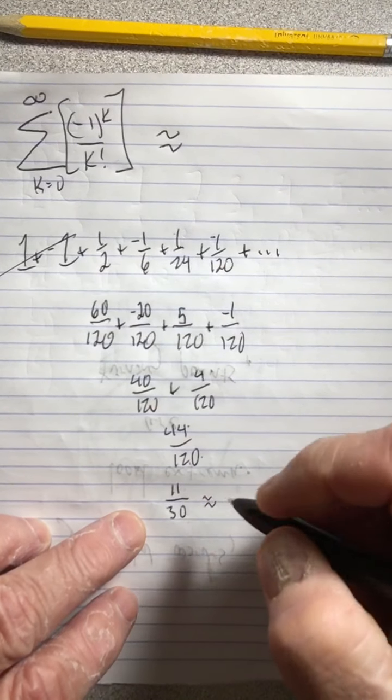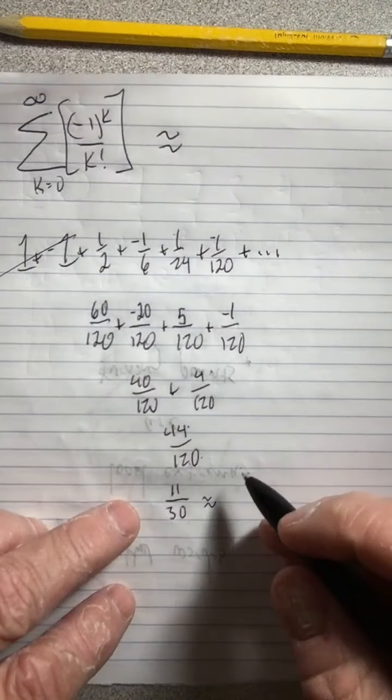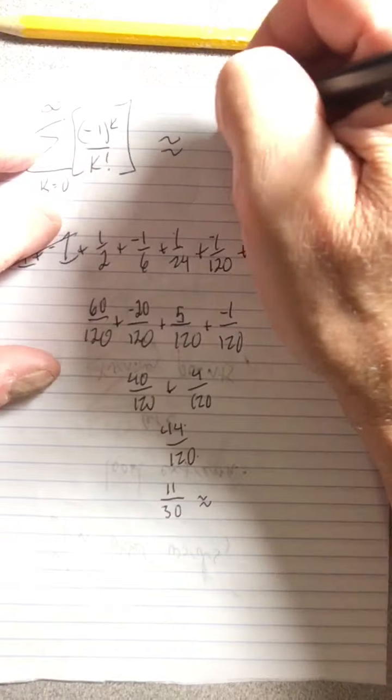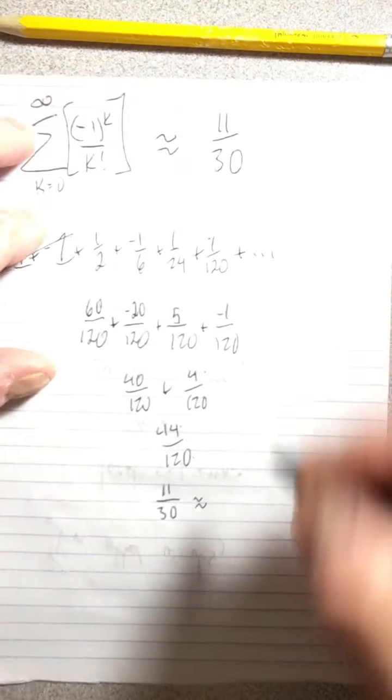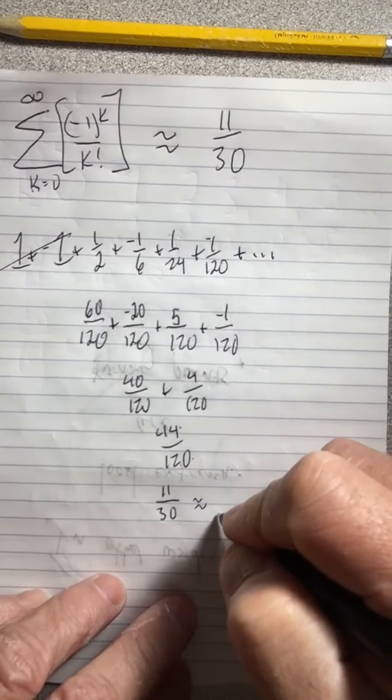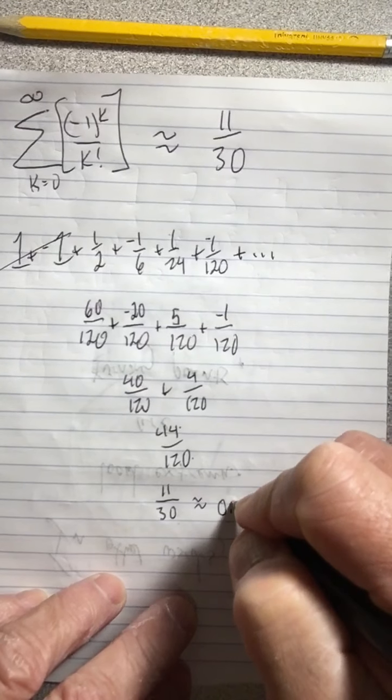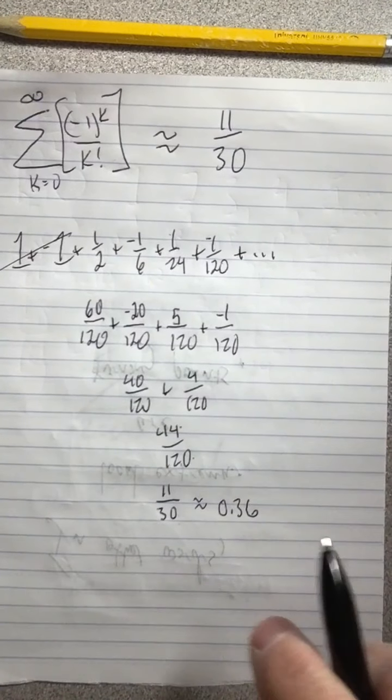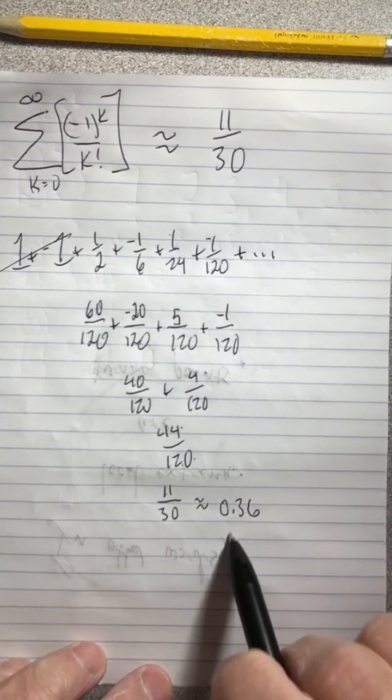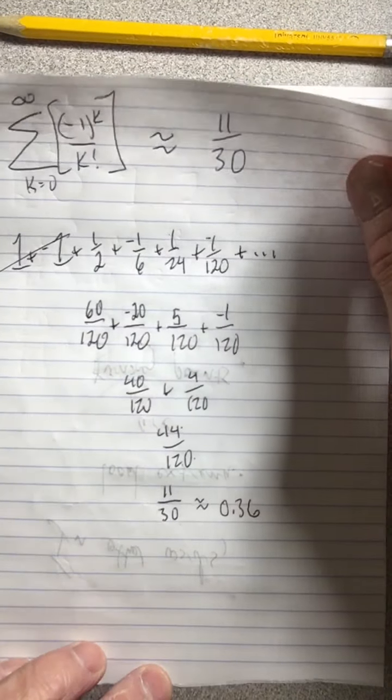But we don't really need this number... well, we do for our estimate. Let's just use 11/30 as our estimate. And if we need a decimal, you know, we may be 0.36, something like that. But I don't think we need a decimal, let's just go with 11/30.